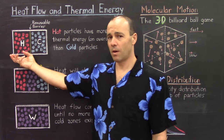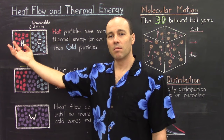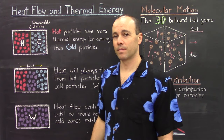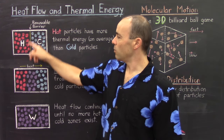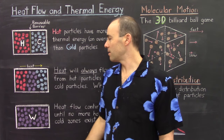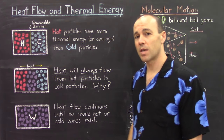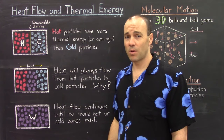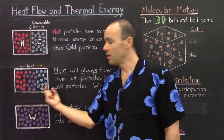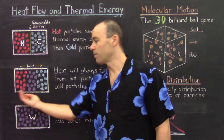But the key word is average. All of these particles aren't necessarily moving around at the same velocity — just their average molecular speed is higher than what the cold particles have. So let's go ahead and remove this barrier and observe what happens. Removing that barrier will allow heat to transfer from the hot side over to the cold side, and that's the direction that heat always transfers: from hot to cold. You never see energy being transferred in the other direction.